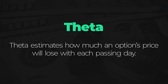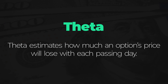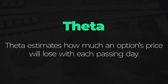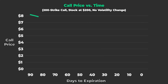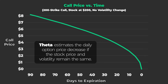The third option Greek to understand is called Theta. Theta predicts the expected decrease in an option's price over time, assuming no change in the stock price or expected volatility. Consider a 90-day call option with a $200 strike price and volatility of 20%. If we keep the stock price and expected volatility constant, the call's price diminishes from $8 to $0 over the 90-day period.